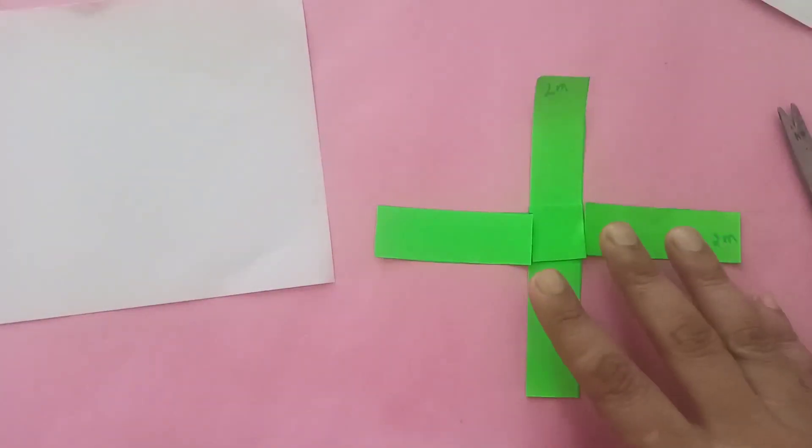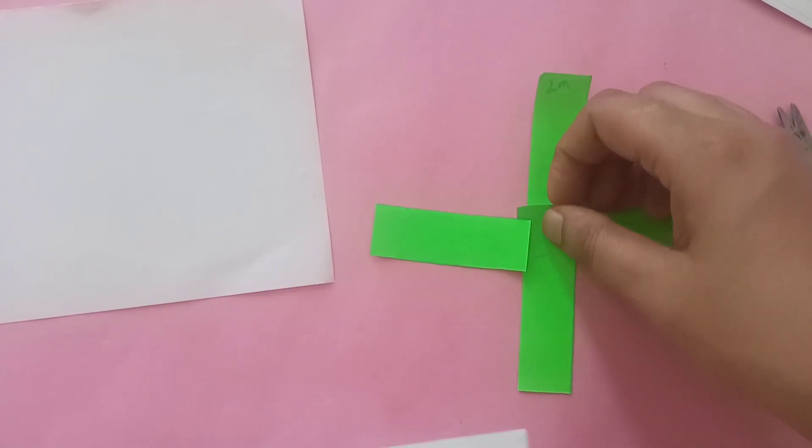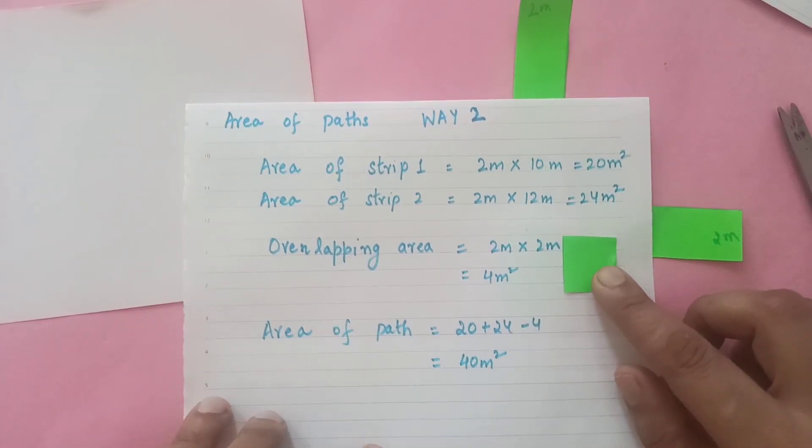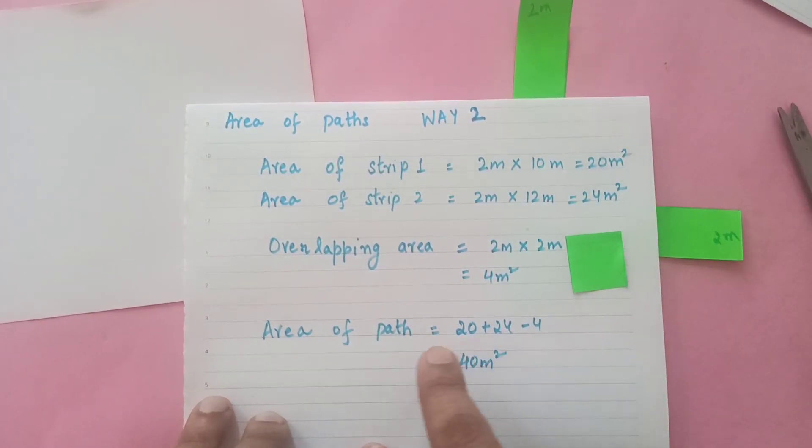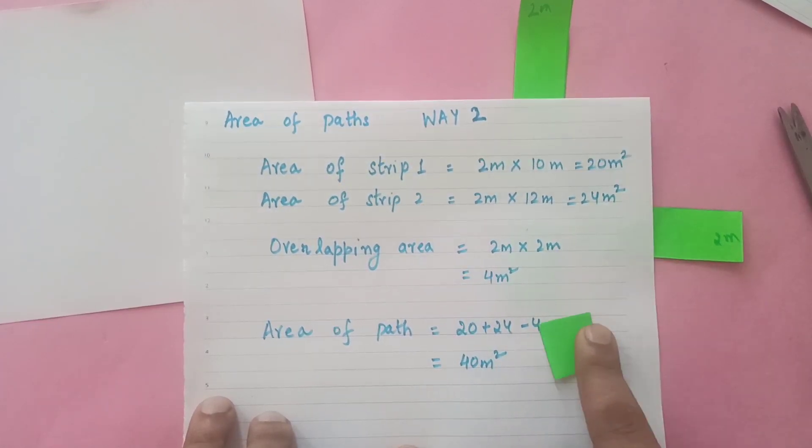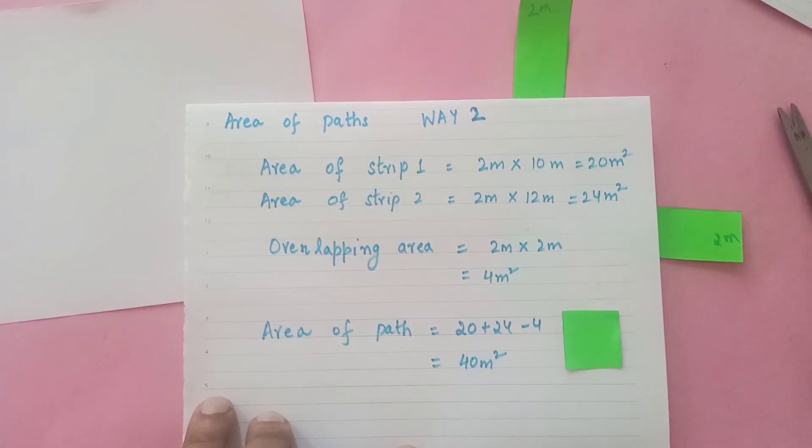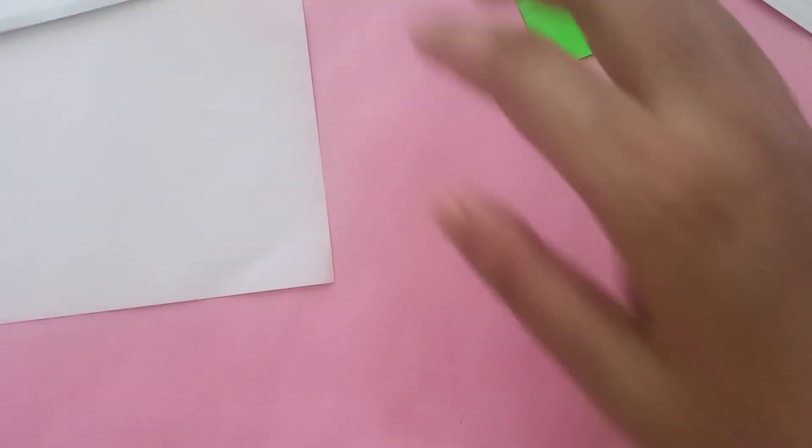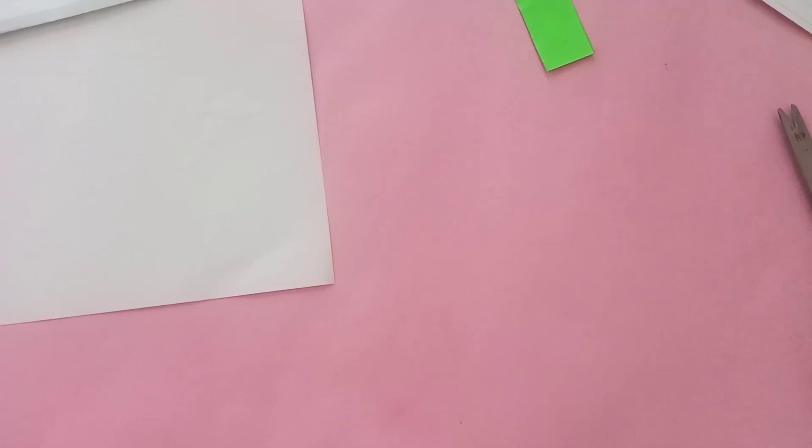So its length and width both are 2 meters, so its area is going to be 2 meters into 2 meters, that is 4 meters square. So this extra part which is the overlapping area which has been counted twice, we need to subtract this from the area of the strips. So 20 plus 24 is the area of both the strips minus this small overlapping area. So it is then again 40 meters square.